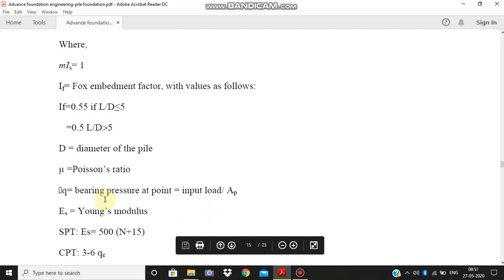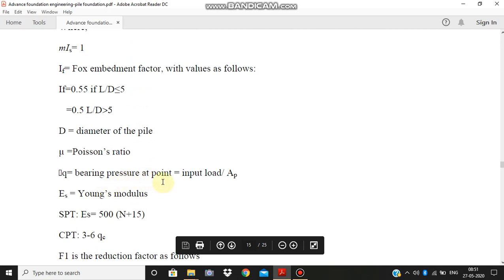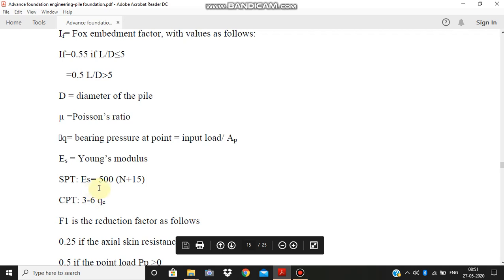Mu is the Poisson's ratio. Delta Q is the bearing pressure at point, which is equal to input load divided by A_p point area. And E_s is the Young's modulus. For SPT, the Young's modulus is equal to 500 into L plus 15.